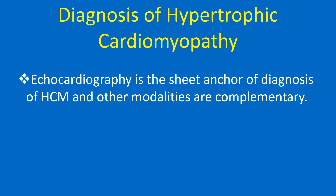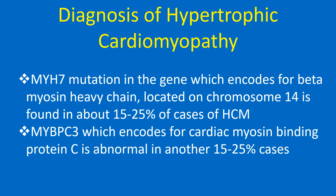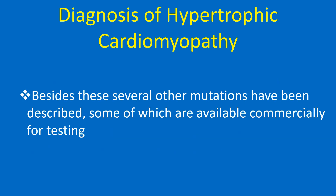Echocardiography is the sheet anchor of diagnosis of HCM and other modalities are complementary. MYH7 mutation in the gene which encodes for beta myosin heavy chain located on chromosome 14 is found in about 15–25% of cases of HCM. MYBPC3, which encodes for cardiac myosin binding protein C, is abnormal in another 15–25% of cases. Besides these, several other mutations have been described, some of which are available for commercial testing.